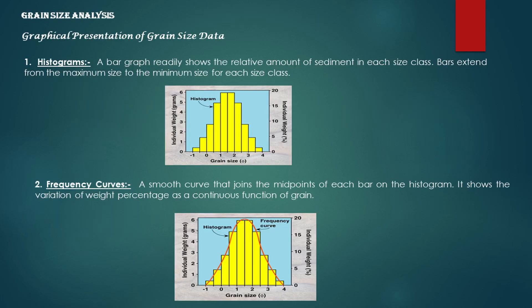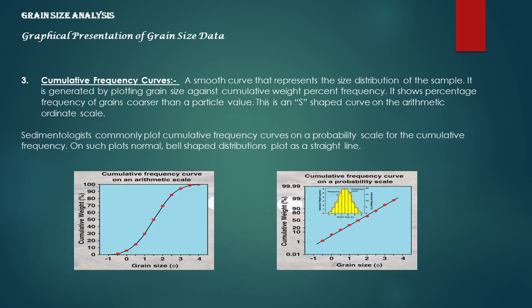Now let's look at the graphical presentation of grain size data. A histogram is a bar graph that readily shows the relative amount of sediment in each size class. Bars extend from the maximum size to the minimum size for each size class. A frequency curve is a smooth curve that joins the midpoints of each bar on the histogram; it shows the variation of weight percentage as a continuous function of grain size. The red curved line in the picture is the frequency curve. A cumulative frequency curve is a smooth curve representing the size distribution of the sample, generated by plotting grain size against cumulative weight percent frequency. It shows the percentage frequency of grains coarser than a given value, forming an S-shaped curve on the arithmetic or net scale.